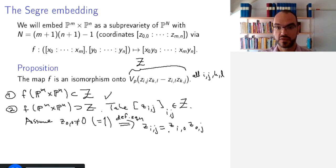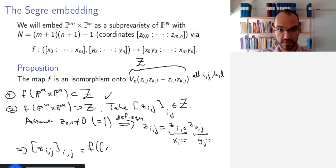And so if we call this X_I and this Y_J, then this means exactly that Z_IJ is equal to F of X_I, Y_J. So then this shows in particular that this point lies in the image.